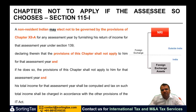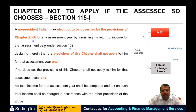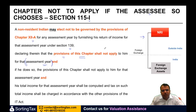A chapter need not apply if the assessee so chooses. Section 115I gives an option to an NRI — an NRI may elect not to be governed by the provisions of Chapter 12A for any assessment year by furnishing his return of income for that assessment year under section 139, declaring therein that the provisions of this chapter shall not apply to him for that assessment year. He can choose the assessment year for which he wants to be governed by Chapter 12A. If he chooses not to be governed, those provisions shall not apply, and his total income for that assessment year shall be computed and tax charged in accordance with the other provisions of the Act.